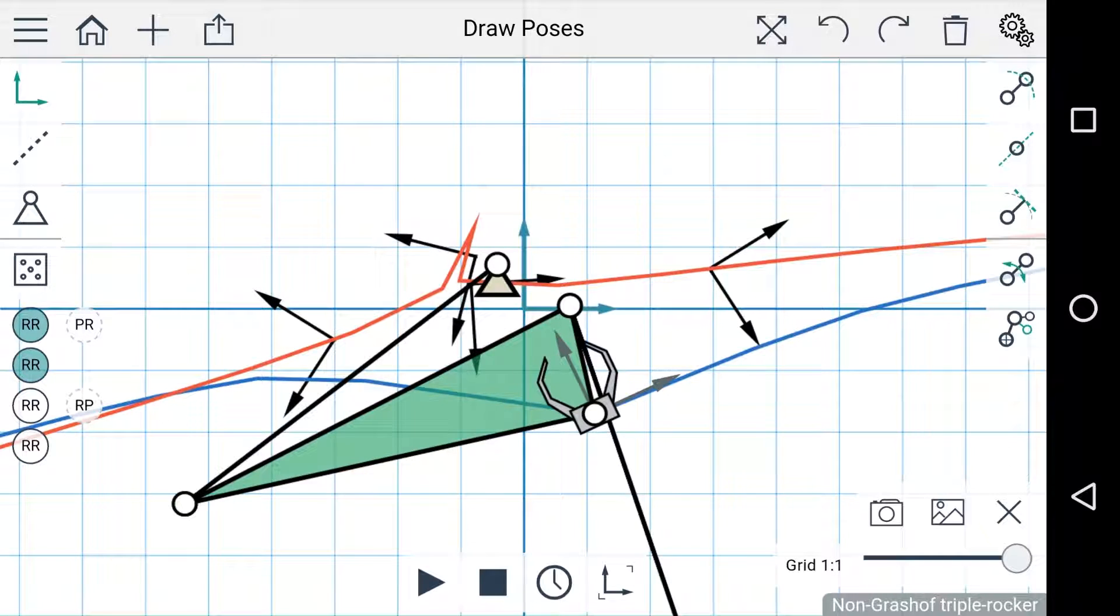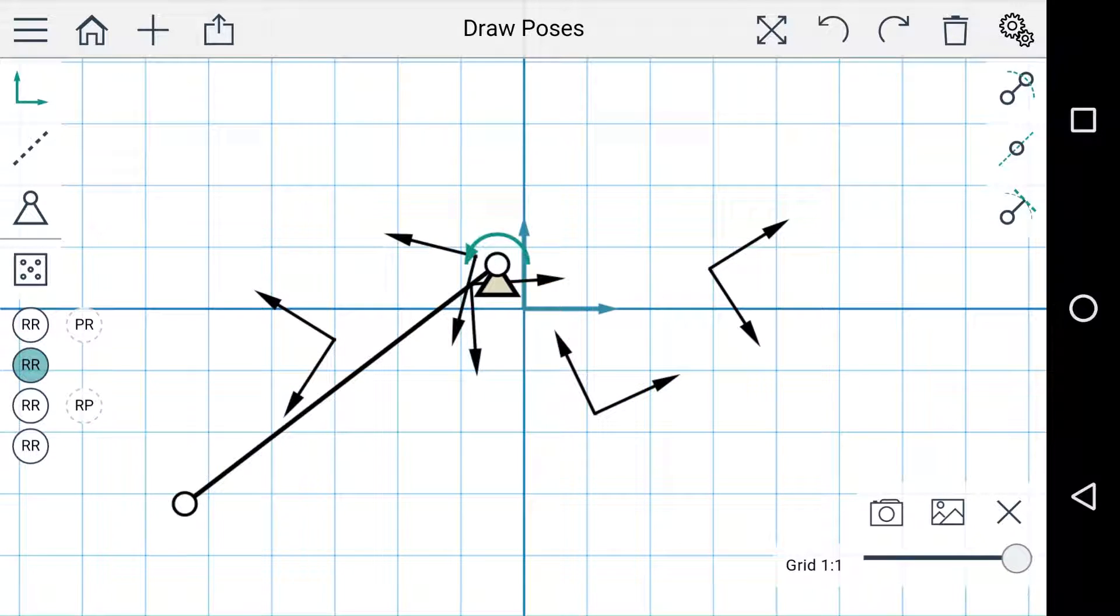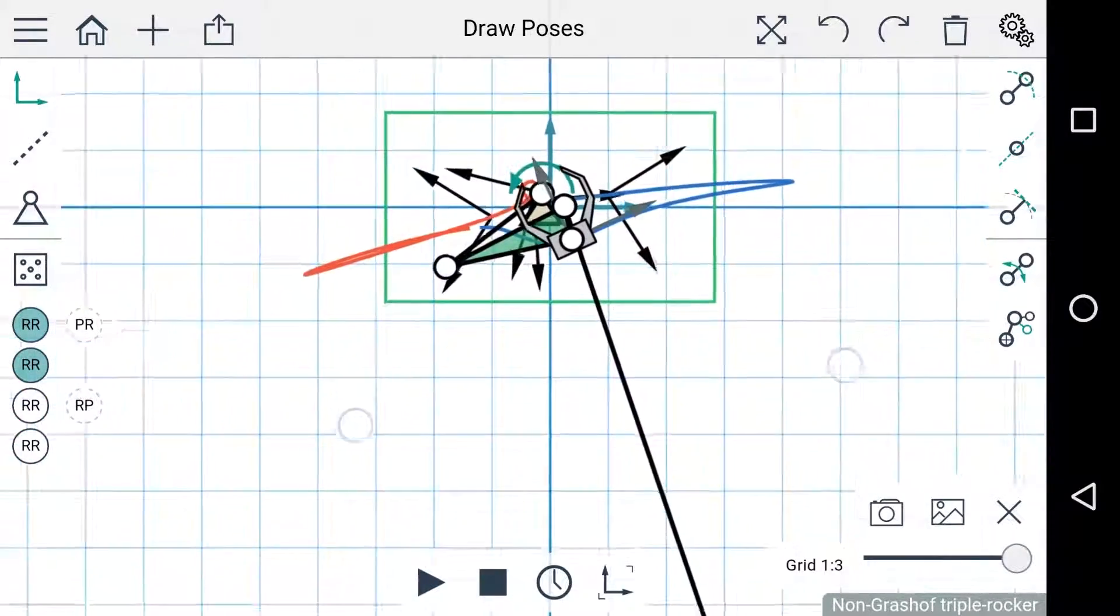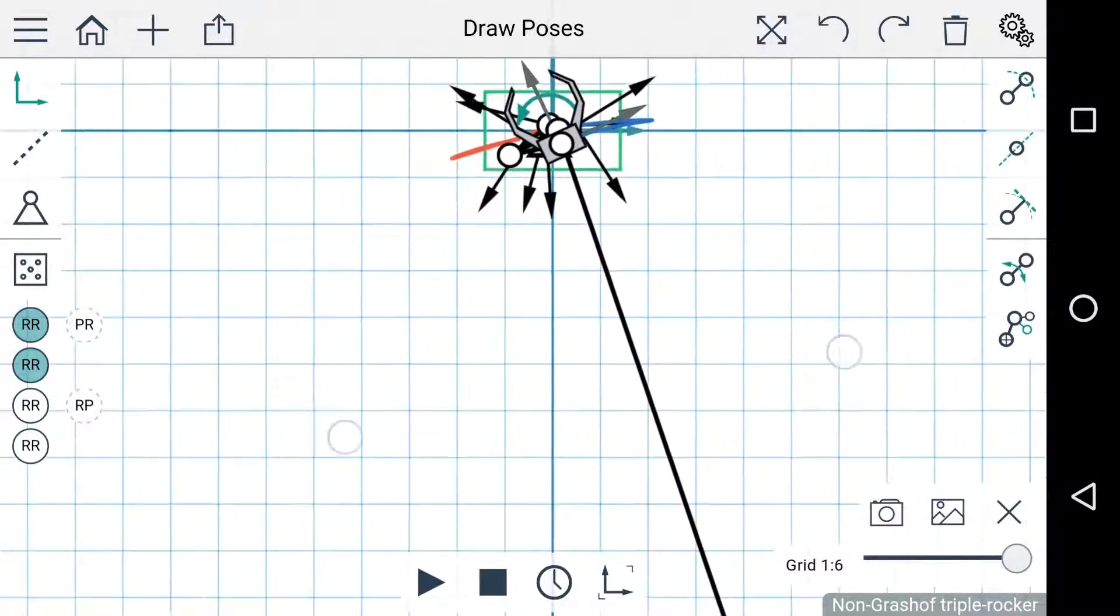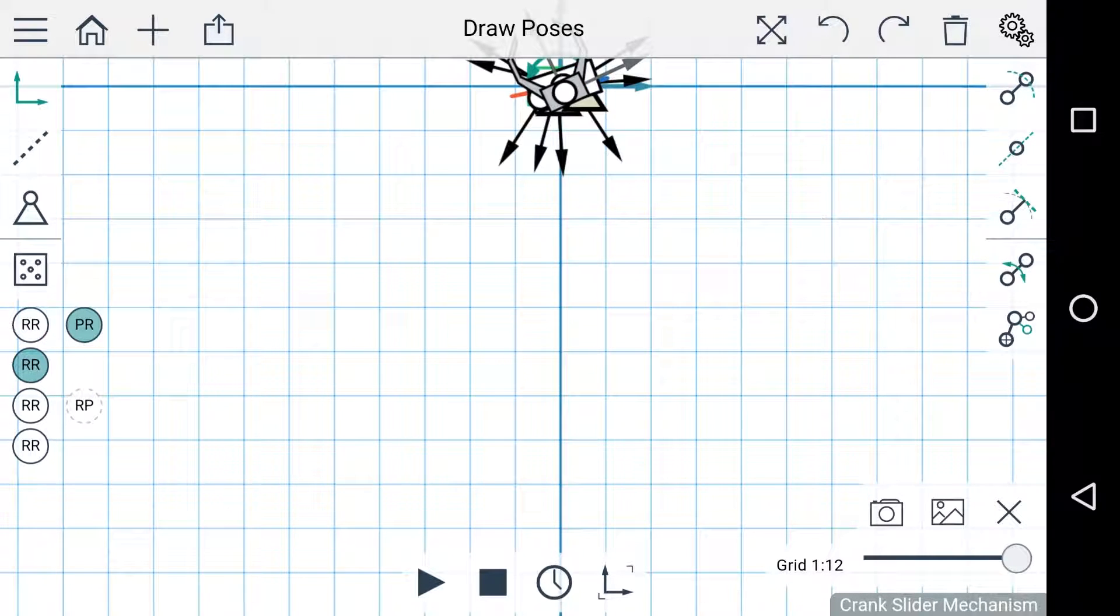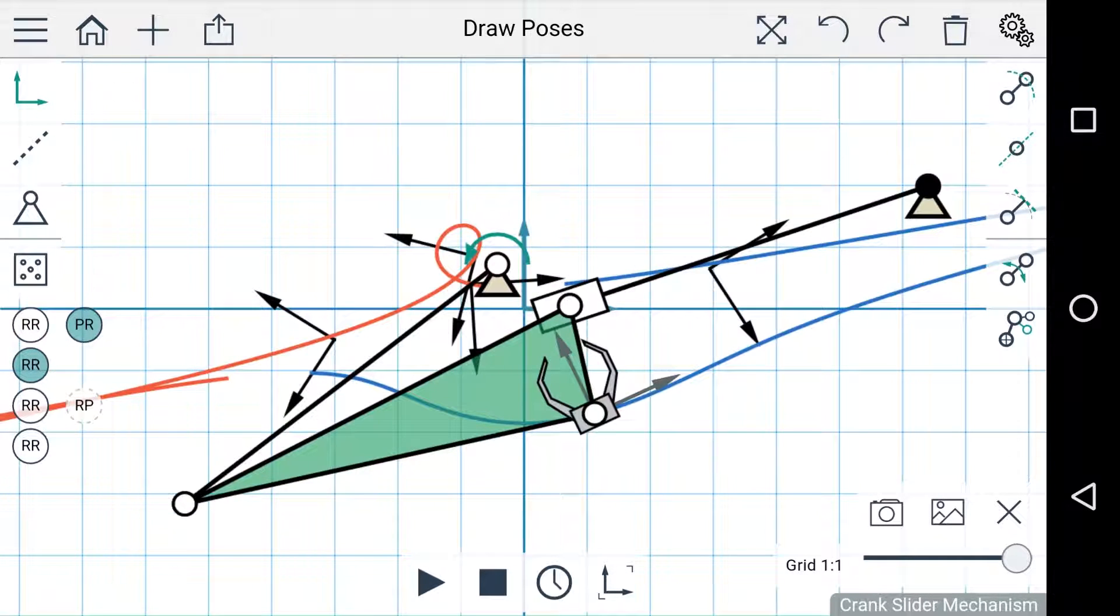If I close the settings menu here you can see that there are a few different options in the dyad menu. Of the two dyads I have selected here, you can see that one of them is actually very large. Because it's so large, this RR dyad can be reinterpreted as a PR dyad which fits much better within the workspace.